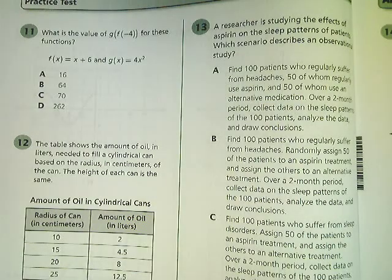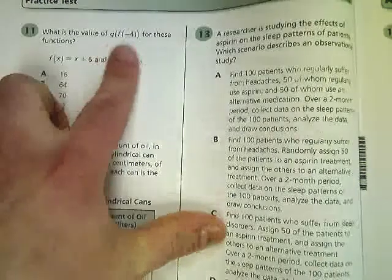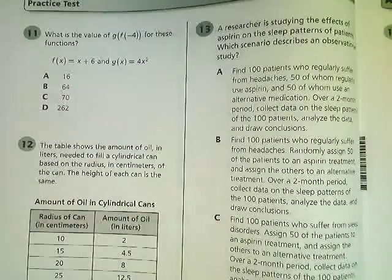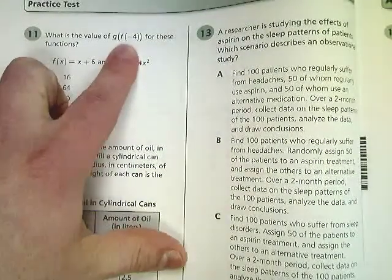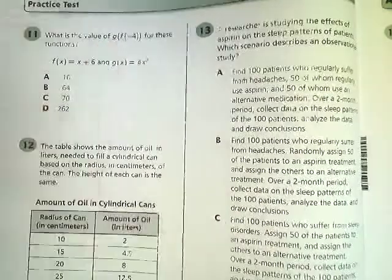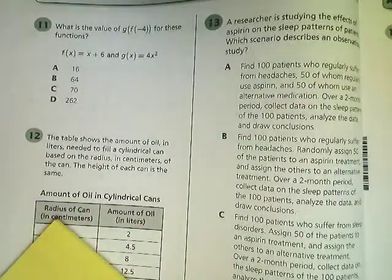You see it has this weird format that says g(f(-4)). What that really means is I'm going to do this function using negative 4. I'm going to use the f function first, and then whatever answer I get, I'll just plug into g. So it's actually a really easy question to do.